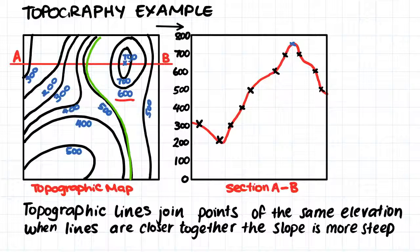If we take a section through this topographic map, as we have done from A through to B, we can plot this section as a cross section.